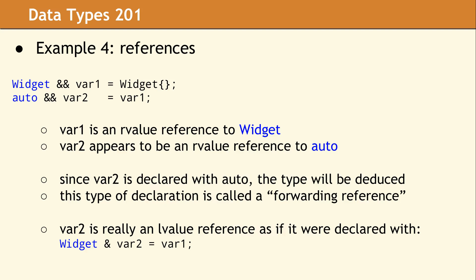On this example, we have what looks like two very similar declarations. Var1 is an R value reference to this temporary widget. Again, since var1 is an R value reference, the lifetime of the temporary will be extended for as long as var1 is in scope. On the following line, it looks like var2 is an R value reference to auto, and you would think auto will be deduced to widget, and therefore var2 will be an R value reference to a widget. This is actually not what happens. Since var2 uses auto, the type is deduced, and when you have a deduced type with two ampersands after it, it's called a forwarding reference. It's no longer an R value reference. In this case, var2 will really be an L value reference, as if it were declared with a single ampersand.